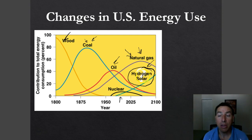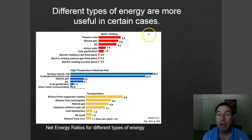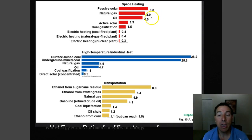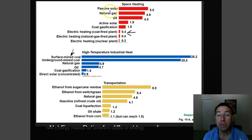If we can harness solar energy and make it more efficient to create hydrogen, it will take the place of a lot of these non-renewable fuels — this is actually the future of power in the United States. The trick is to make solar more efficient and more affordable. When we talk about different energy types, they are more efficient for certain cases. Looking at net energy ratios: for space heating, passive solar is one of the best ways, followed by natural gas, then oil. Most of our heating and cooling in the United States is done by methods with a not-very-large net energy ratio.